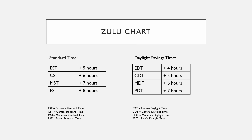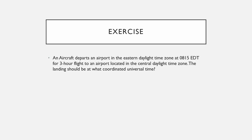Let's now work through an exercise together. Don't worry if you can't do this alone — we're doing it so I can show you how it's done. Here is the exercise: an aircraft departs an airport in the Eastern Daylight Time zone at 0815 EDT for a three-hour flight to an airport located in the Central Daylight Time zone. The question asks: what is the landing time in coordinated universal time?